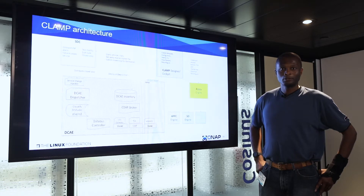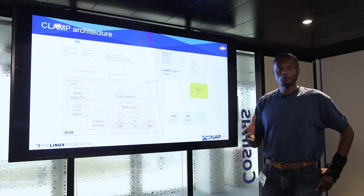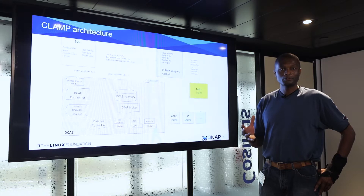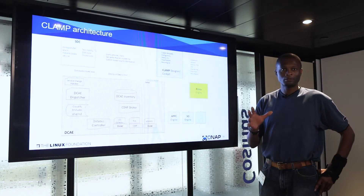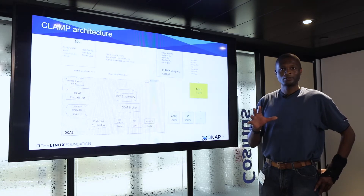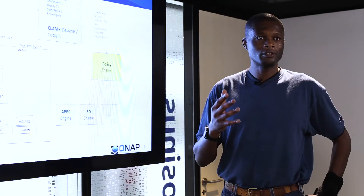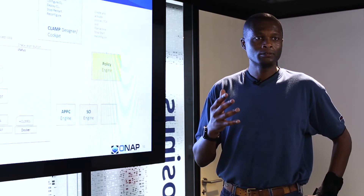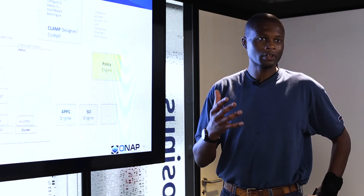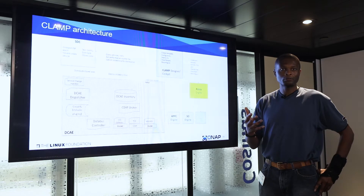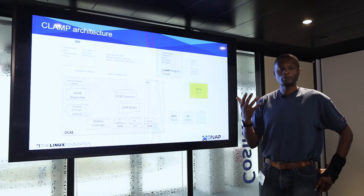At design time, CLAMP will set up the whole closed loop configuration parameters for both the DCAE part and the policy part. At runtime, CLAMP will get feed from DCAE with information regarding the status and the state of the control loop, which will be displayed on the design part of CLAMP so people can see what is the state of the control loop.